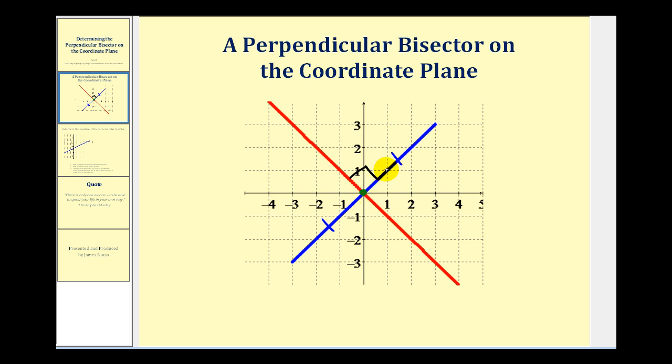Notice how the slope of this blue segment is positive one and the slope of the perpendicular bisector is negative one. They're negative reciprocals of one another, and their product is also equal to negative one. Let's take a look at an example.